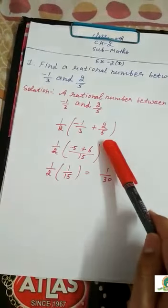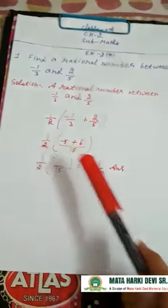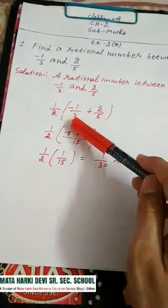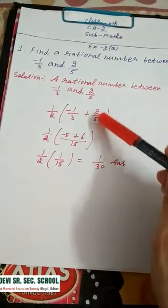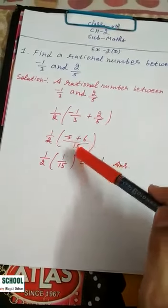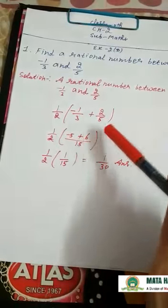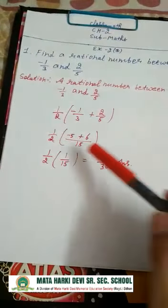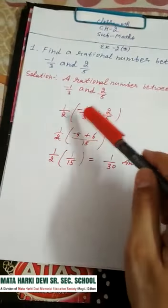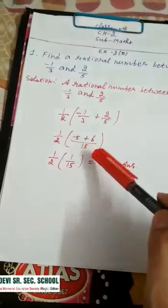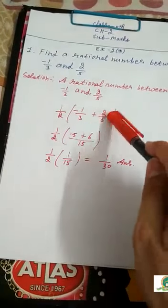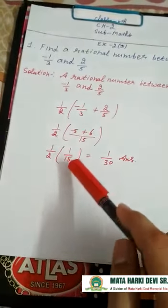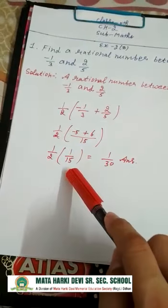Add these two numbers: minus 1 by 3 plus 2 by 5. The LCM of 5 and 3 is 15. So 15 divided by 3 is 5, and 5 times 1 is minus 5. 15 divided by 5 is 3, and 3 times 2 is 6. So minus 5 plus 6 is 1, giving 1 by 15. Then multiply by 1 by 2, giving 1 by 30.